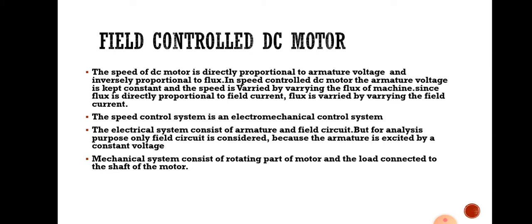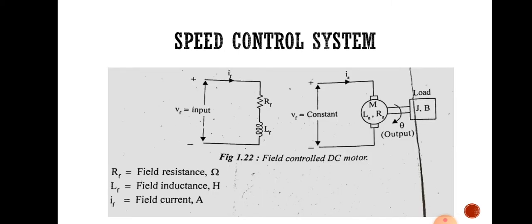The field controlled DC motor speed control system is shown in the figure, with the electrical part and mechanical part indicated. The electrical part consists of the field circuit containing resistance Rf, inductance Lf, and exciting voltage Vf. The armature section carries current ia, and the mechanical part consists of the motor load with moment of inertia J, friction coefficient B, and displacement θ.